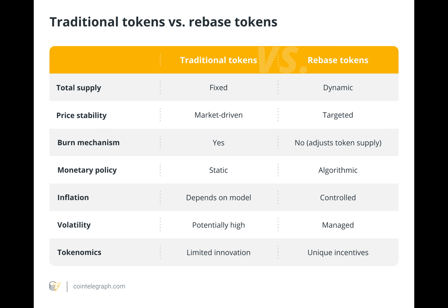Determining the timing of tax reporting for rebase tokens presents a challenge, since it involves maintaining accurate records and estimating the token's fair market worth at each rebase event. Furthermore, because tax authorities may interpret regulations differently, regulatory ambiguity complicates the tax treatment of rebase tokens. Therefore, users must be aware of the taxation laws in their country to ensure compliance with tax laws and regulations.